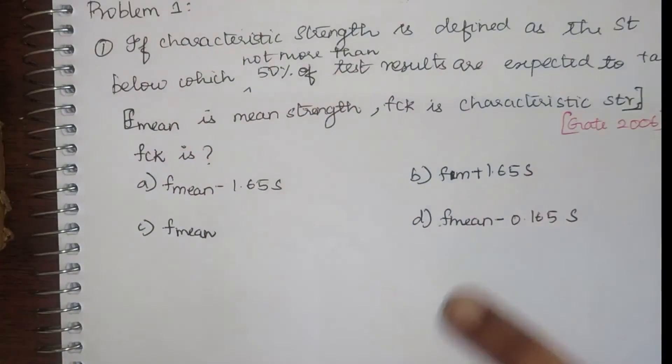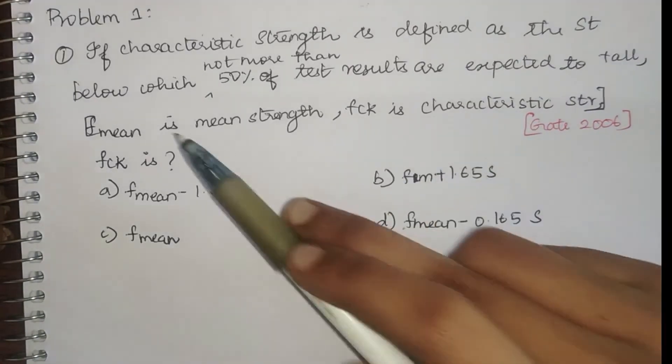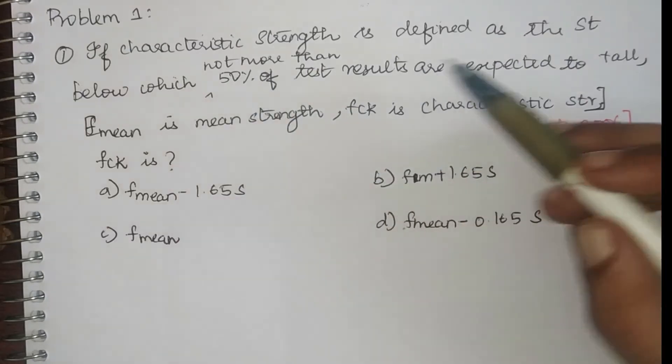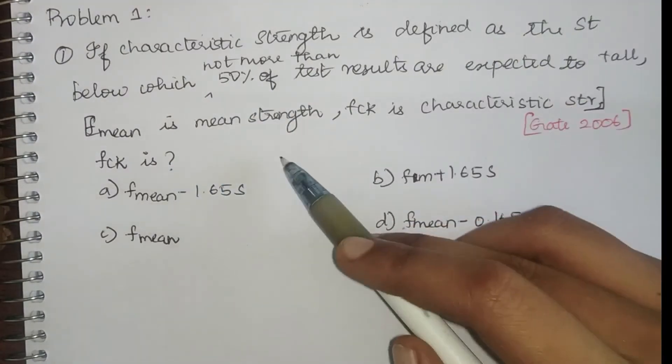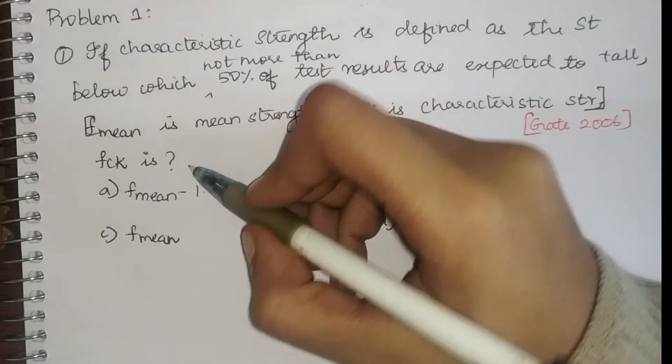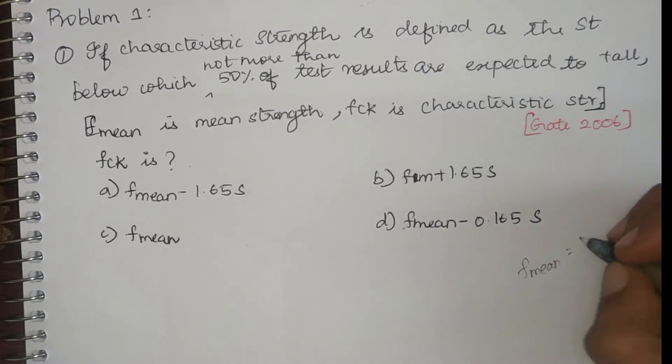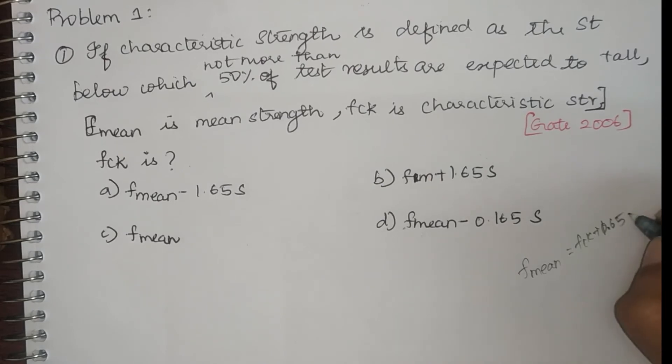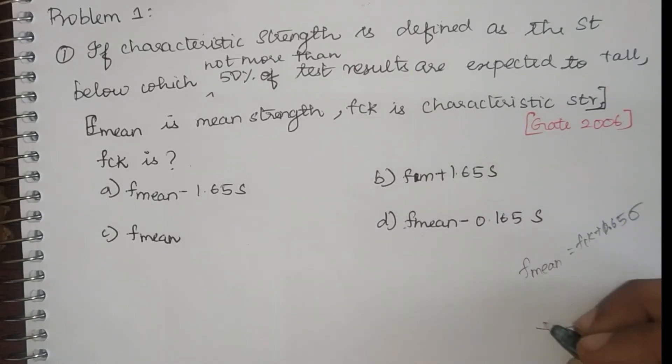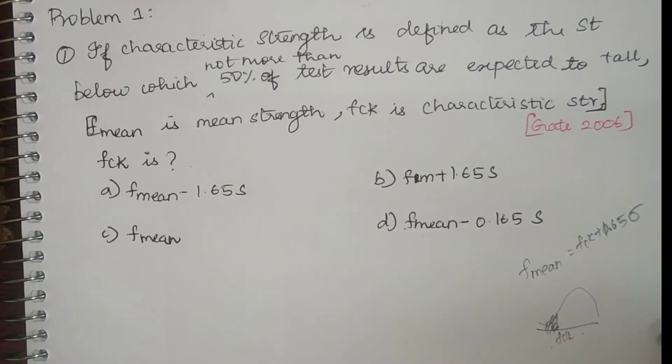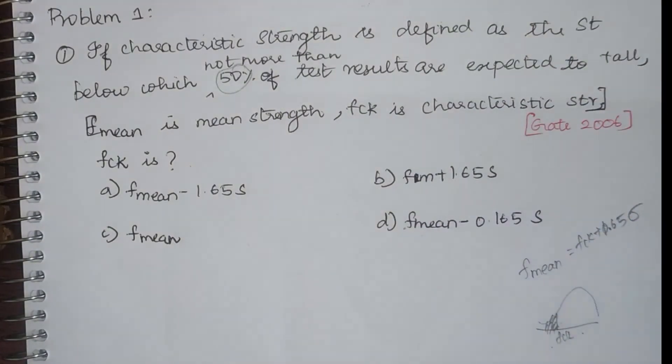This is all about theory today. Let us look into the problem. This question was asked in GATE 2006. If the characteristic strength is defined as a strength below which not more than 50 percentage of the test results are expected to fall, f mean is the mean strength, fck is the characteristic strength, then what is fck? We know the formula for f mean: f mean is equal to fck plus 1.65 times standard deviation. But this is for a curve where only 5 percentage of the test results are falling below the characteristic compressive strength. But in the question they have told that 50 percentage of the test results are falling.